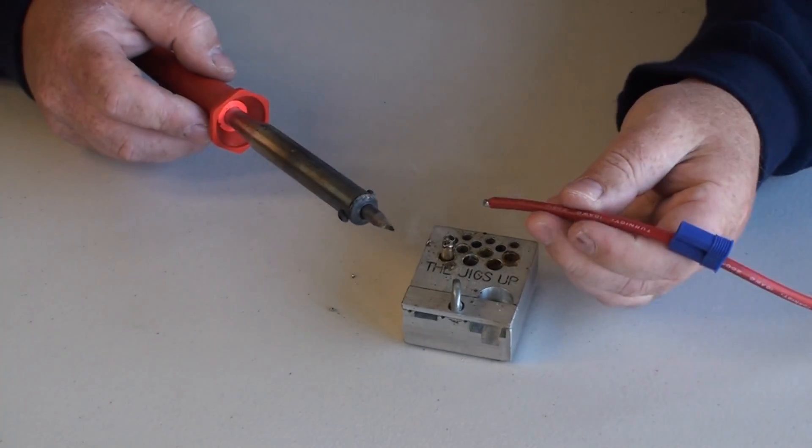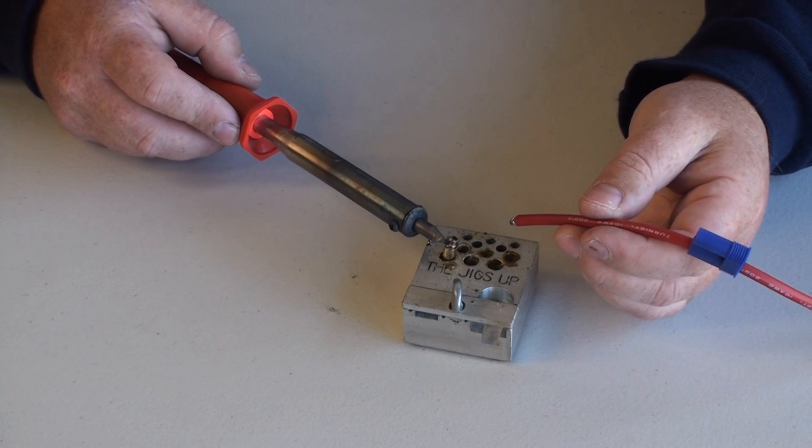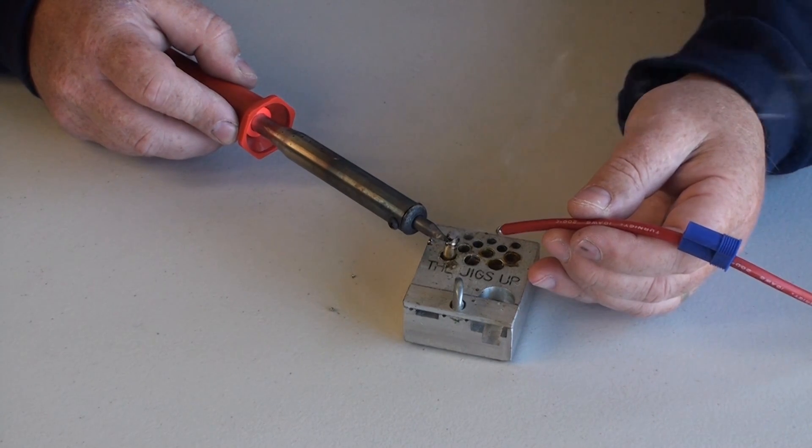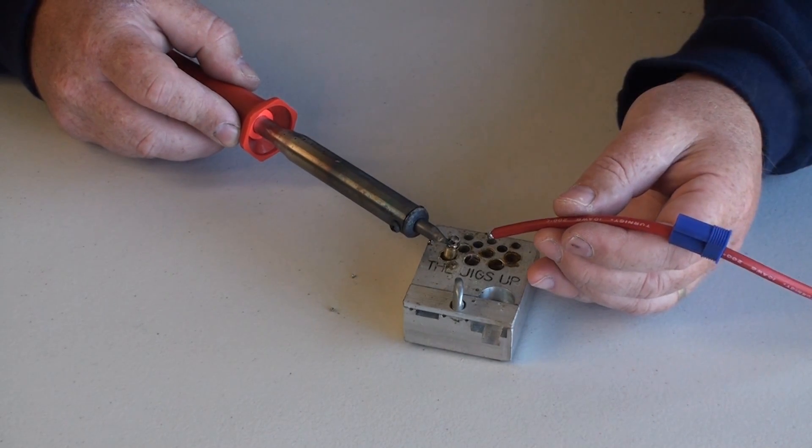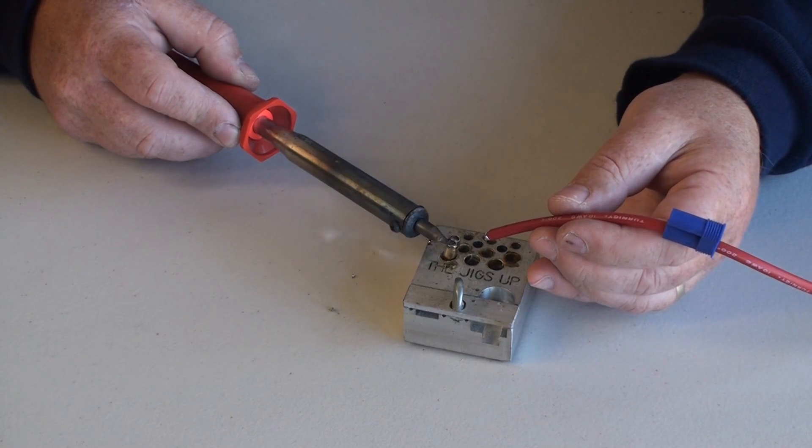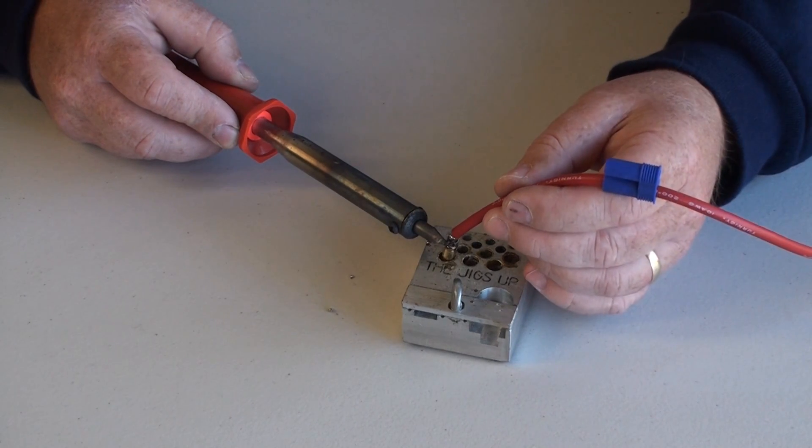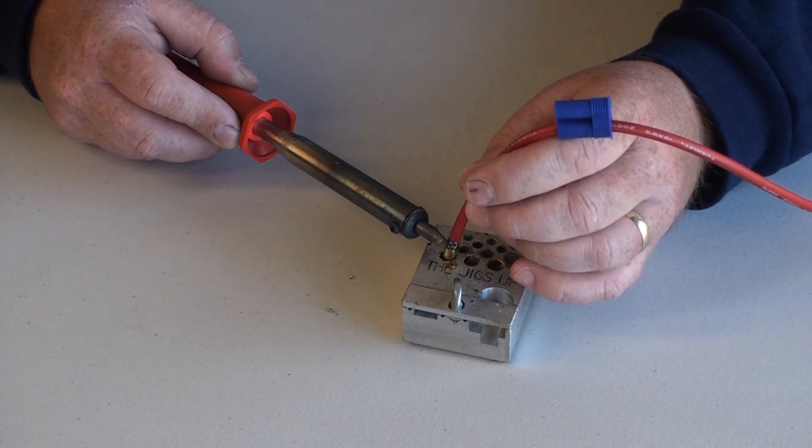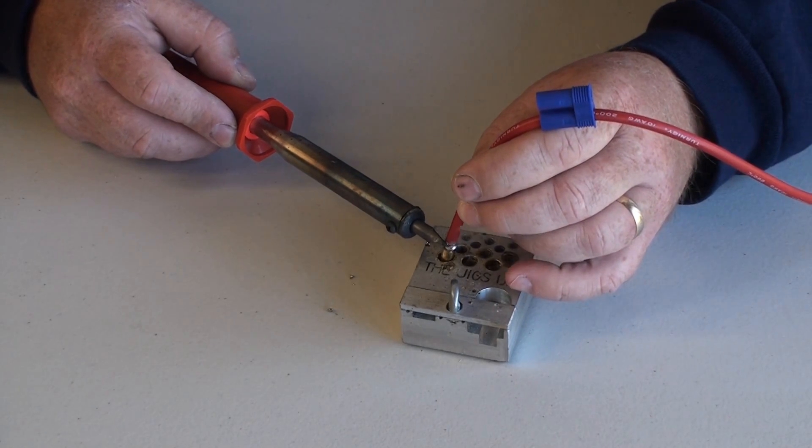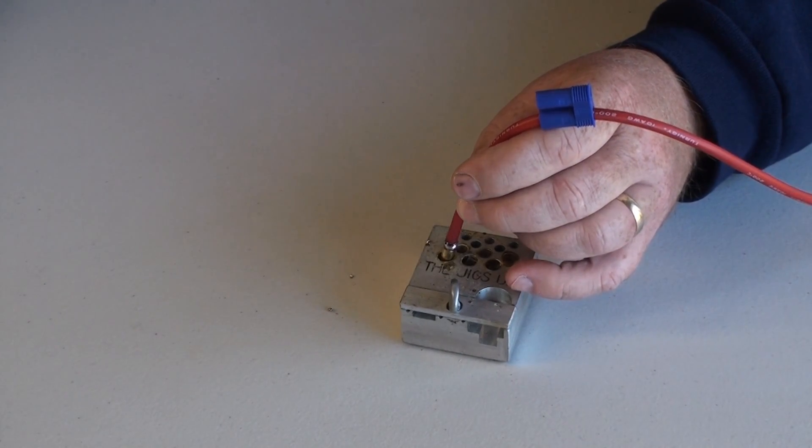Next we want to drop the lead from the battery into the connector. So again, heat the connector up. Once the solder inside starts melting, position the lead, drop it in, remove the heat, and now let it cool.